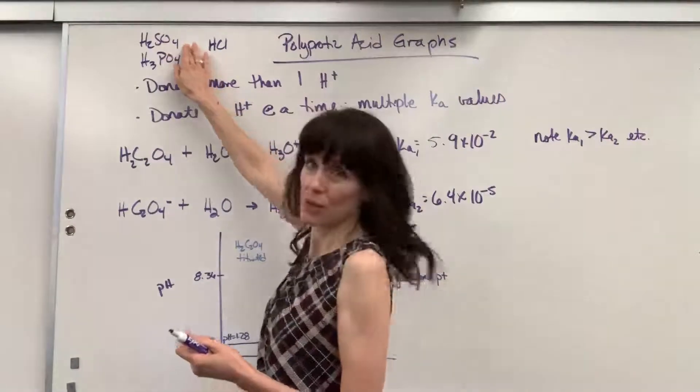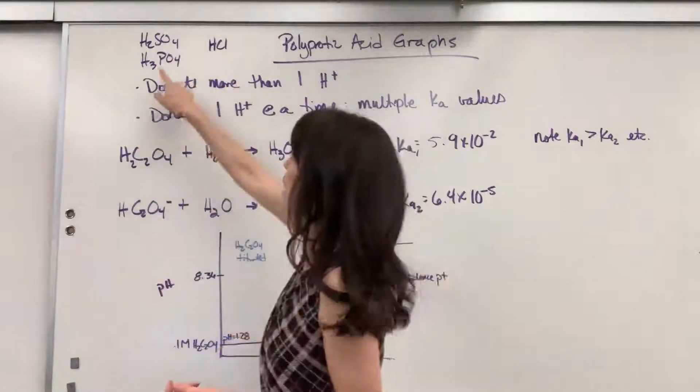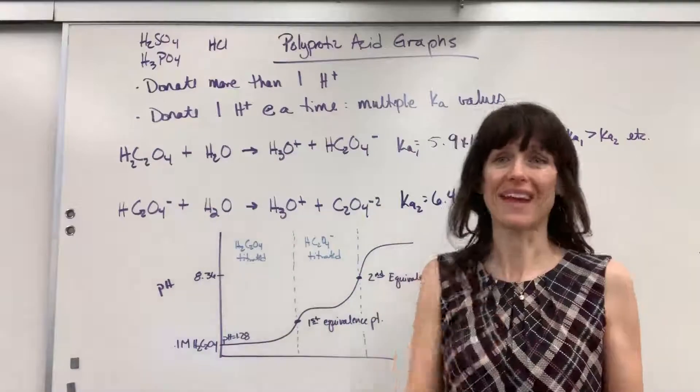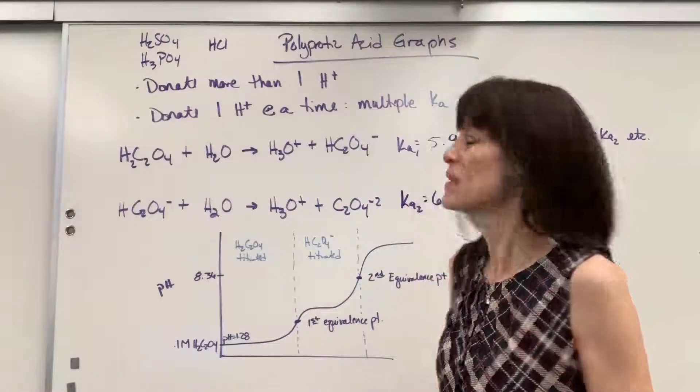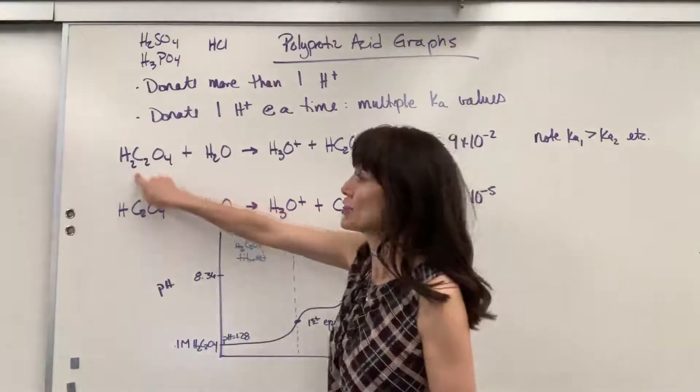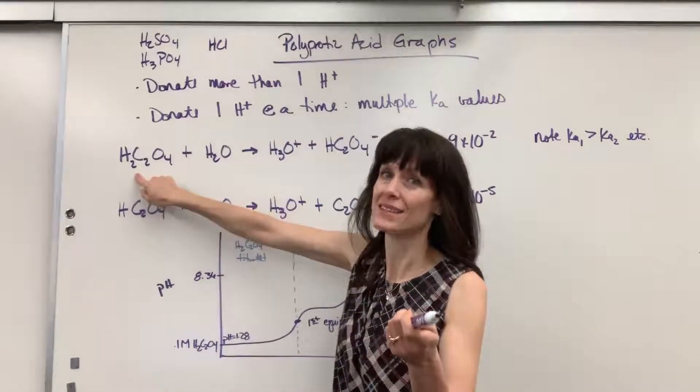So sulfuric acid, diprotic will have two Ka values. Phosphoric acid, three hydrogens will have three Ka values. So I wrote an example here for you with oxalic acid. Here we have oxalic acid, two hydrogens. What's it called? Diprotic.